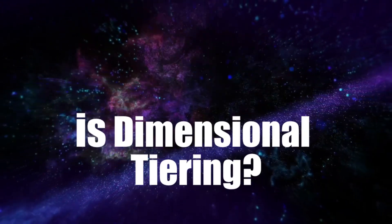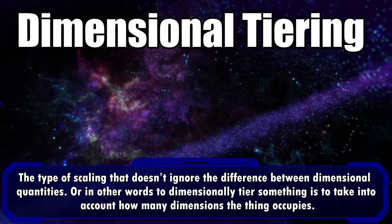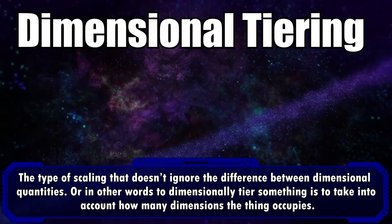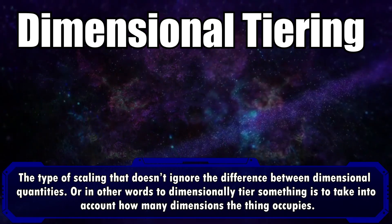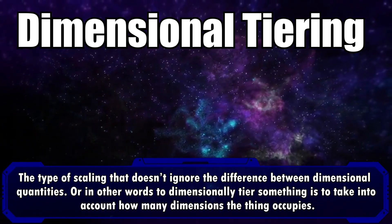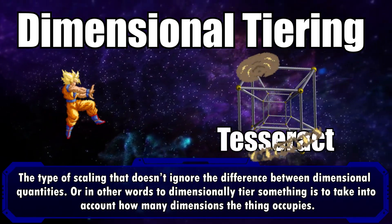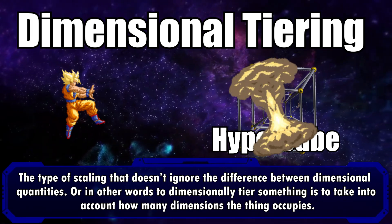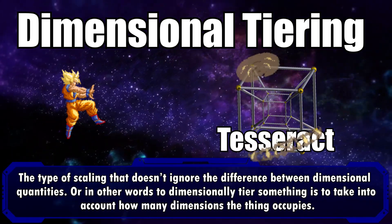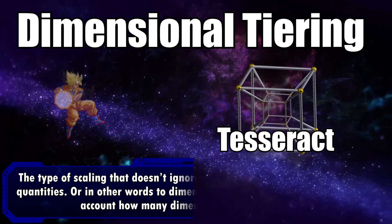So what is dimensional tiering? Dimensional tiering is the type of scaling that doesn't ignore the differences between dimensional quantities. In other words, to dimensionally tier something is to take into account how many dimensions the thing occupies. For example, if a character destroyed a tesseract — also known as a hypercube — this would be a fourth-dimensional feat, since tesseracts or hypercubes are defined by being fourth-dimensional.